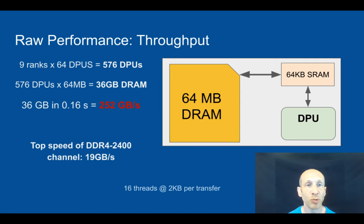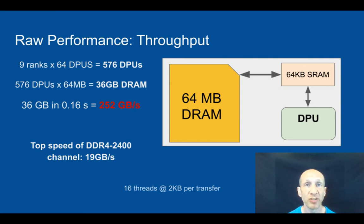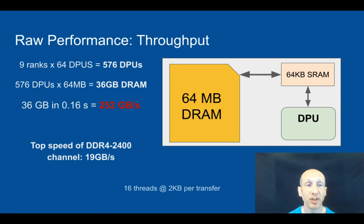We wanted to measure the raw throughput of the system. We took a system with nine ranks of 64 DPUs each, for a total of 576 DPUs. Each DPU had access to 64 megabytes of memory, for a total of 36 gigabytes of DRAM. We programmed all DPUs to move their memory simultaneously and were able to move all 36 gigabytes in 0.16 seconds, giving an approximate throughput of 250 gigabytes per second. Compared to a standard DDR4 2400 channel with a top speed of 19 gigabytes per second, there is a huge potential performance gain. Our trick is to learn how to realize that gain.